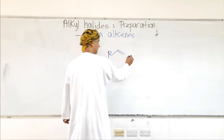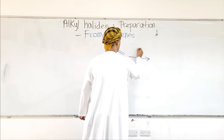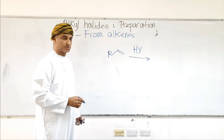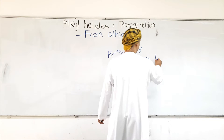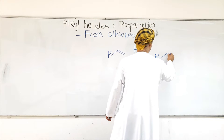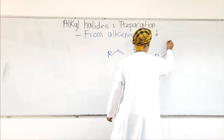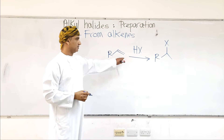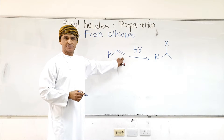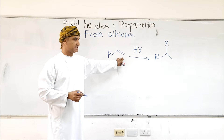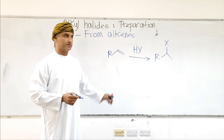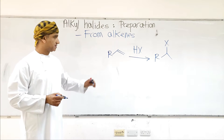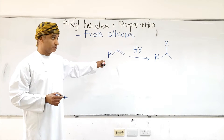Alkenes in general can react with HX — a halogen acid — following Markovnikov's rule, and an alkyl halide is produced. The hydrogen from HX would bond to the carbon with more hydrogens or fewer alkyl substituents, and X from HX would bond to the carbon with fewer hydrogens or more alkyl substituents. This is Markovnikov's rule.